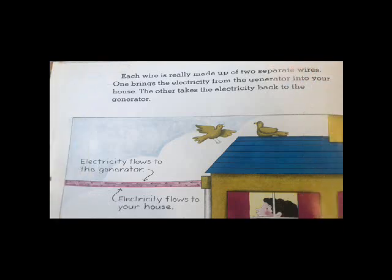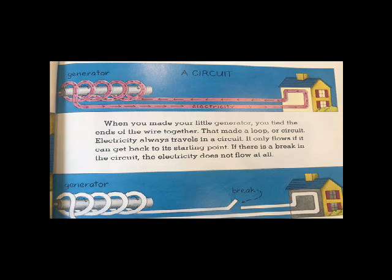Each wire is really made up of two separate wires. One brings electricity from the generator into your house. The other takes the electricity back to the generator.